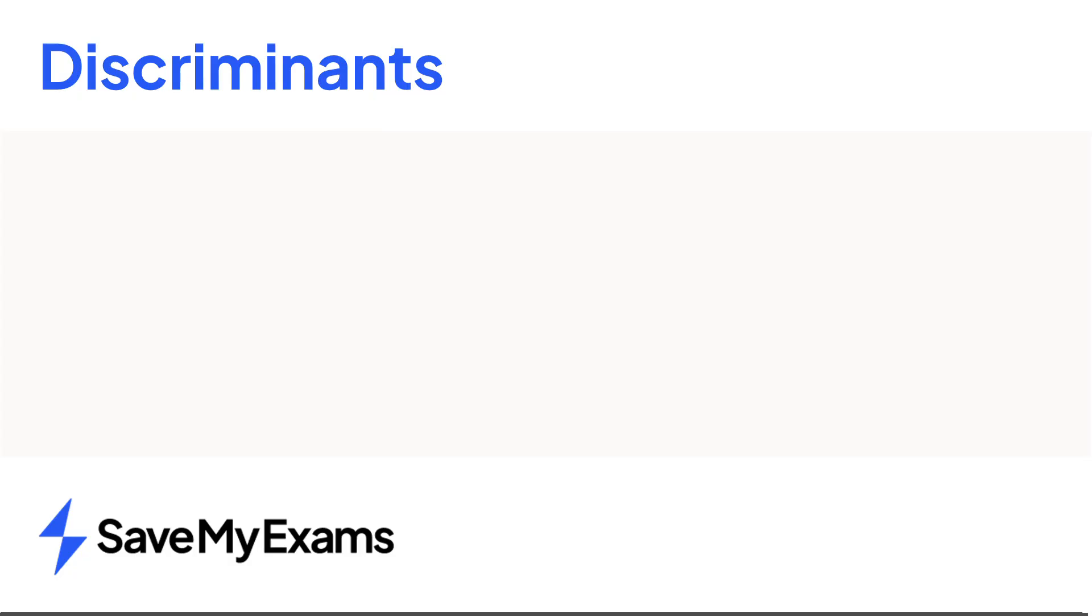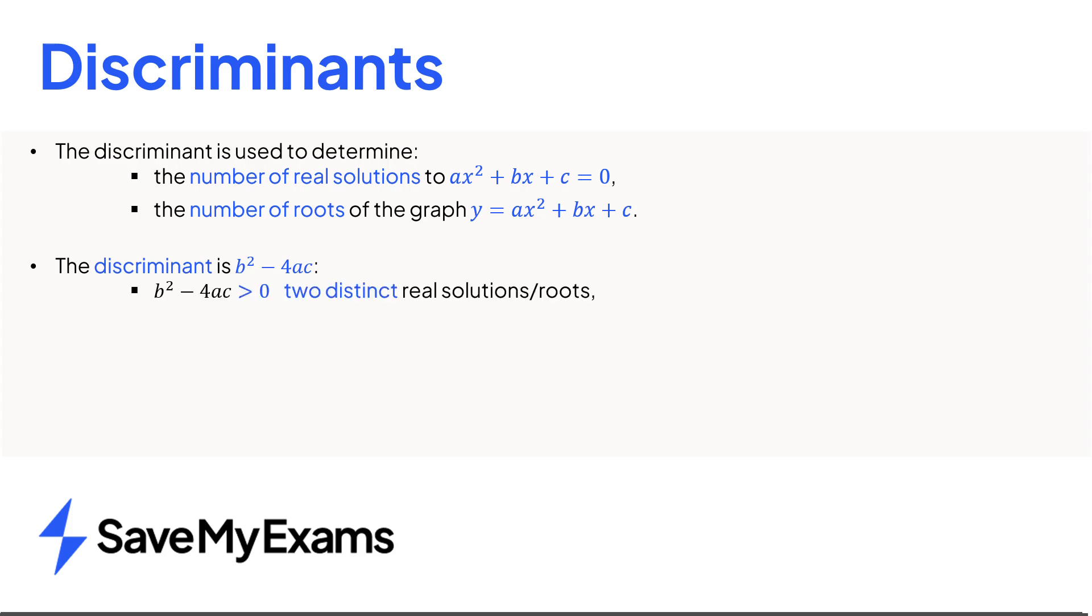In summary, the discriminant is used to determine the number of real solutions to a quadratic equation, or the number of roots of a quadratic graph. The formula for the discriminant is b squared minus 4ac. And if this is positive, then there's two distinct real solutions or roots. If it's zero, then there's one repeated real solution or root. And if it's negative, there's no real solutions or roots.